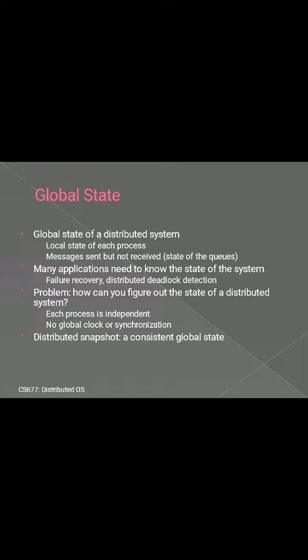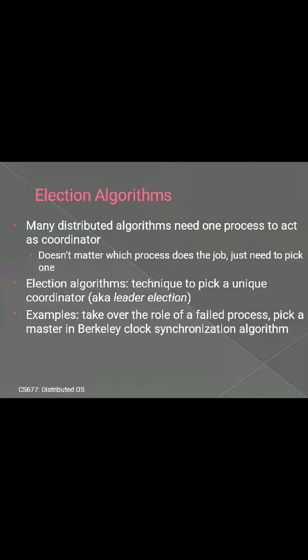The problem that may occur is: how can you figure out the state of the distributed system? We can figure it out if each process is independent and there is no global clock or synchronization. A consistent global state is known as the distributed snapshot. So here we come to what is the election algorithm.